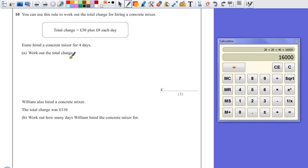Well, we know it's going to be £30, but how much does it cost for those four days? Plus eight for each day. So we've got four lots of £8. Again, put it in the calculator if you're not sure. But four times eight is £32.